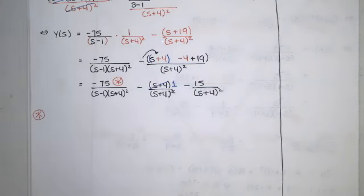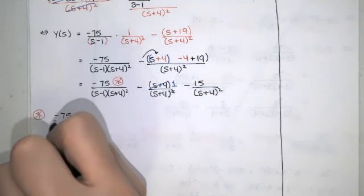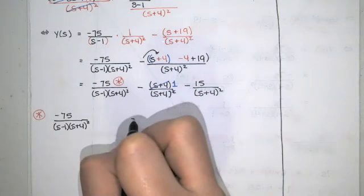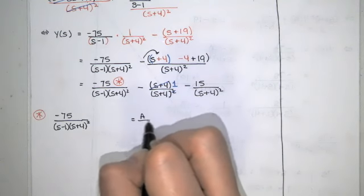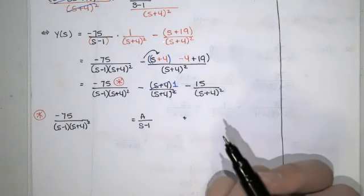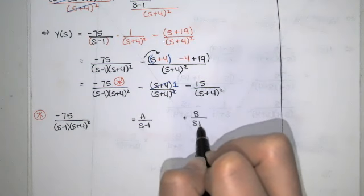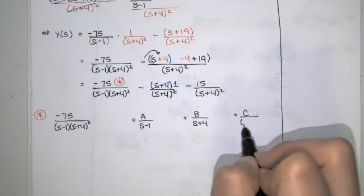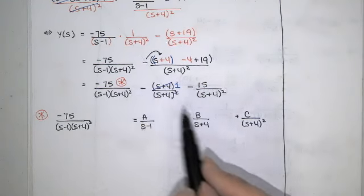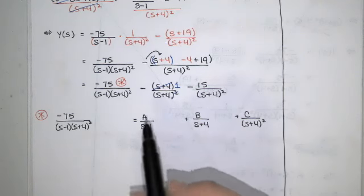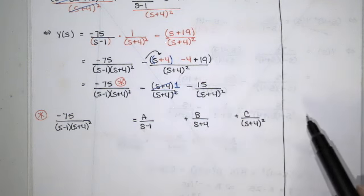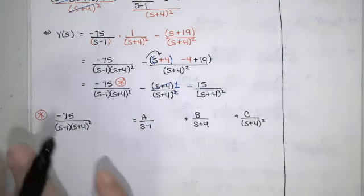I'm doing all of this to get back to y of t. For the partial fraction decomposition of negative 75 over s minus one times s plus four squared, I have a linear factor s minus one giving a constant A over s minus one, and a repeated linear factor s plus four squared giving B over s plus four plus C over s plus four squared. Since the exponent is two, we get two terms. If it were s plus four cubed, we'd add a third term D over s plus four cubed.